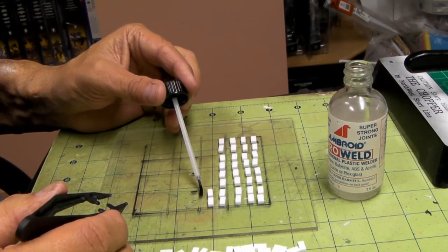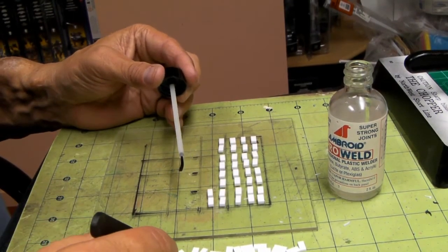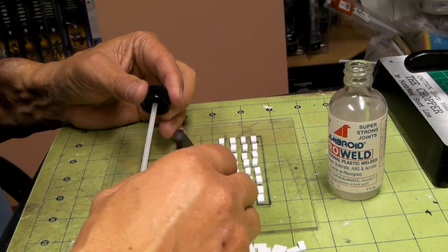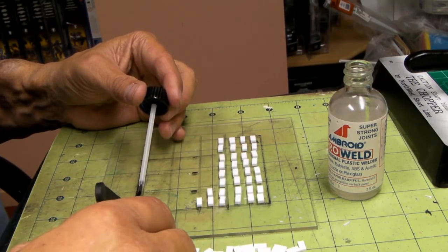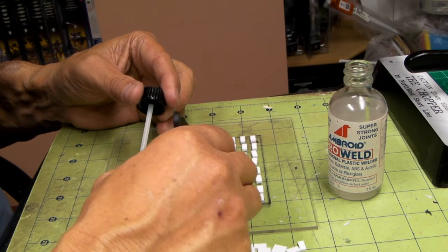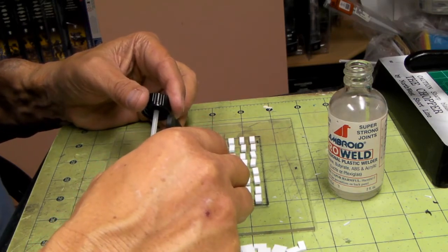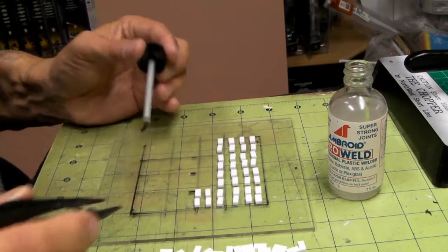Looks like I got maybe an eighth of an inch measurement between each of these. And this stuff, you gotta be fast with this. The glue kind of goes dry, sets very quickly. So that one might not sit. We're good.